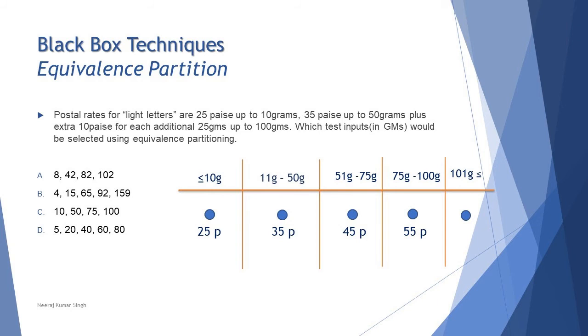D sounds like a boundary value and they are asking you equivalence partition, so this cannot be equivalence partition value. C can be very well equivalence partition value because any value from a particular range can be picked up. So C is right, now covering only four ranges. D says 5 first range, 20 second range, 40 second range, 60 third range, and 80 fourth range.